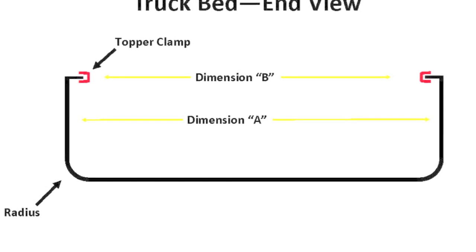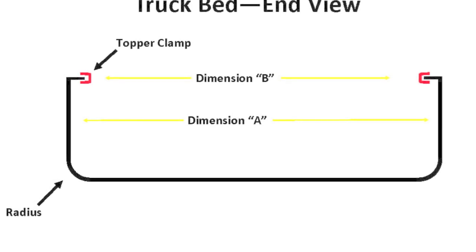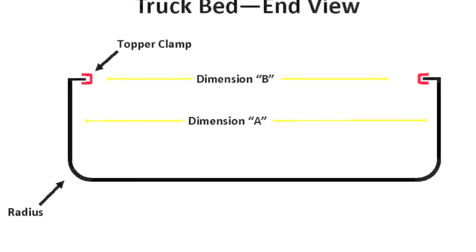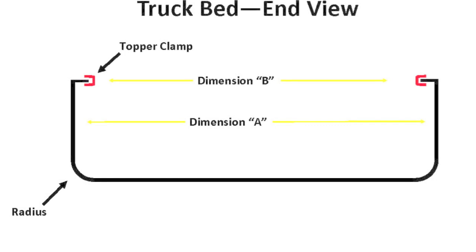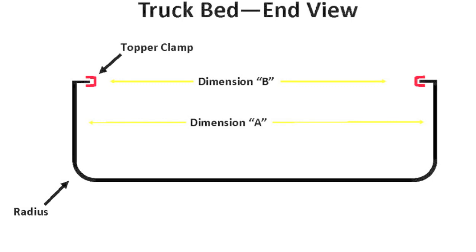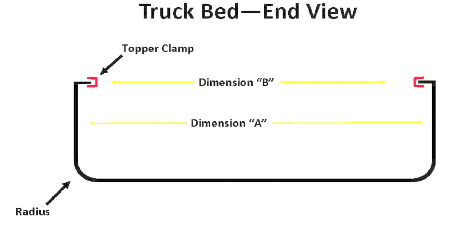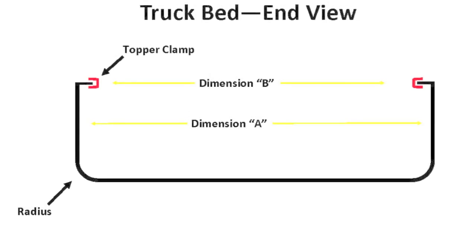The first thing I want to point out is that when you're looking at your truck bed, there are really two different widths that you need to consider. The first width is the overall inside width of the bed, from sidewall to sidewall. On my diagram, that width is shown as dimension A — that is the greatest overall width available to you. The next width to consider is the width between the clips used to secure your truck topper, which is dimension B on my diagram. As you begin planning your build, you'll begin to see why those two dimensions matter.